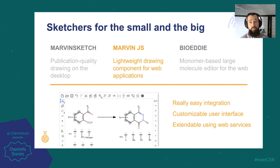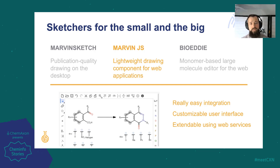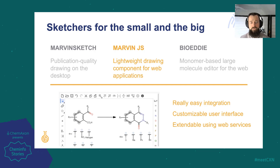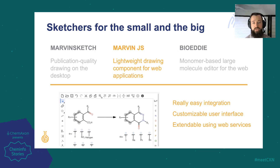MarvinJS is our web sketcher and introduces fast and intuitive chemical drawing to any web application. It's gained popularity as the editor component of choice in ELNs, inventory systems, compound catalogs, or many public compound databases. MarvinJS may also serve as the renderer of live structures or static images online. In the future, we expect all the lessons learned from MarvinSketch and MarvinJS will be combined in our next generation chemical editor, which we're currently referring to as MarvinNG.